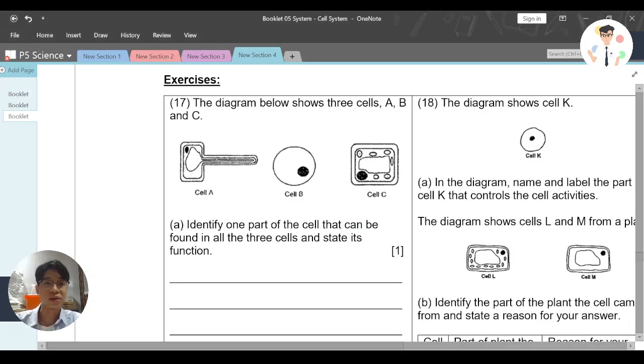Welcome back to the digital class and now we are looking at this question. This question says the diagram below shows three cells A, B and C. Identify one part of the cell that can be found in all three cells and state its function. So what I need to do is identify and then say the function.